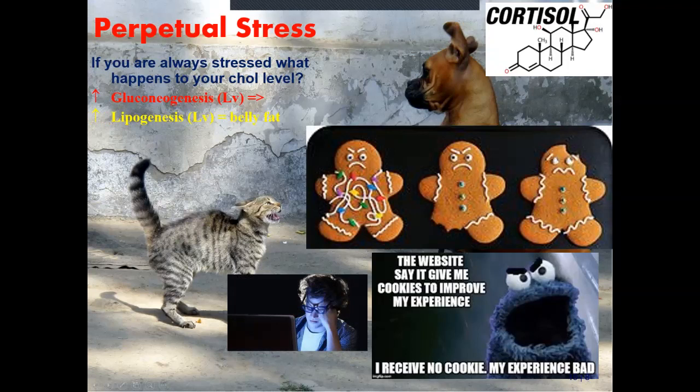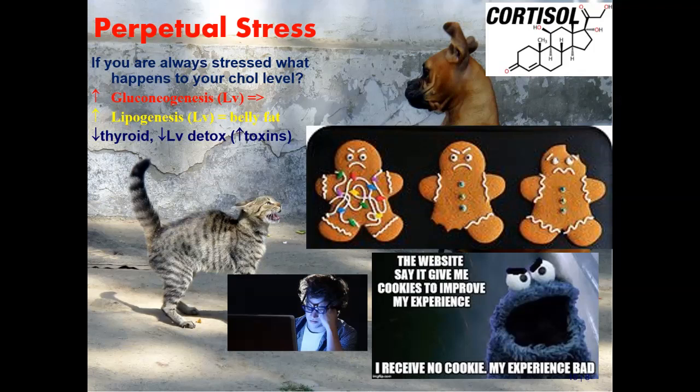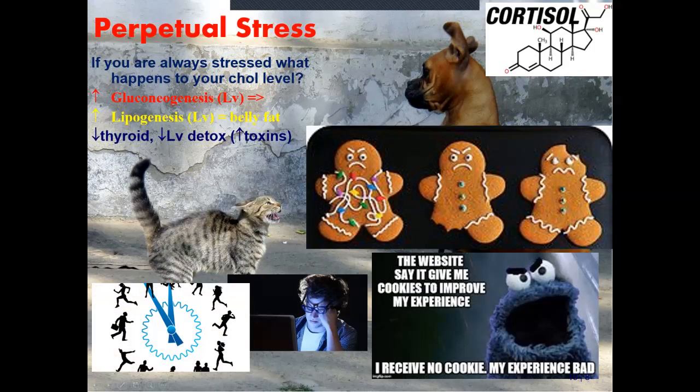Other stresses include staying up late at night and staring at computer screens for a long time. Another perpetual stress is staring at your TV screen watching the news all the time - get rid of your TV, go enjoy the sunshine. Some of the things this is going to cause: your thyroid gets depleted, your liver detox gets depleted because the liver is too busy dealing with the cortisol that keeps coming in. It also depletes your immune system - turns it off. Lower white blood cells, higher rates of cancer.